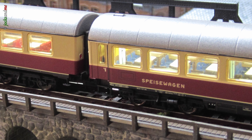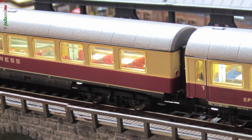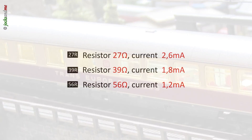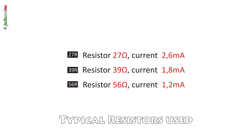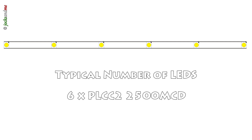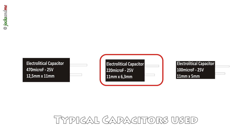The right level of lighting intensity is given by very small currents in the order of 1 mA to 2 mA, selected by the resistors. A typical example would be a 39-ohm resistor giving a current of 1.8 mA. It's very important to select high power LEDs, because only these with such small currents give us the right intensity. A typical number of LEDs would be 6, but it can be more or less depending on the length of the car. The capacitors used are the smallest available on the market, and we will select the biggest that fits in the space available. A typical example would be a 220 µF capacitor.